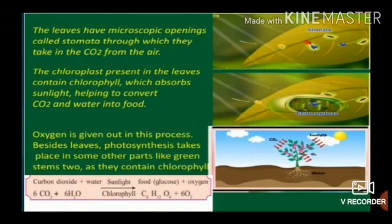The overall equation for photosynthesis: Carbon dioxide plus water, in the presence of sunlight, produces food — glucose plus oxygen.